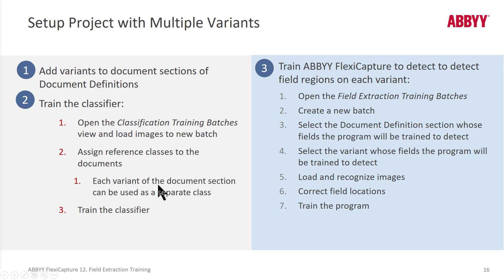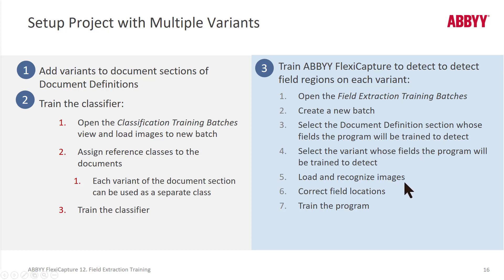You're prompted to assign reference classes through a nice GUI interface. Then you train the classifier, and FlexiCapture is able to classify documents at a variant level. Next, open the Field Extraction Training Batch and create a new batch for each variant. You'll be prompted to select which document definition and which variant of that document definition, load images for that variant, correct and indicate the field locations, and train. You'll end up with a separate training batch for each variant.